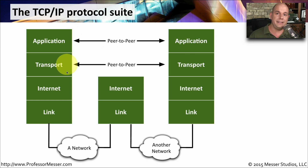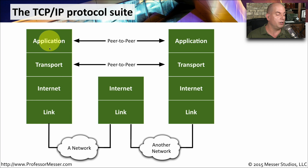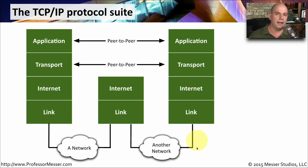The transport layer — the UDP and TCP port numbers — talk to each other directly, but neither of them know anything about what's happening down at the network level. Down at the internet and link level is where the communication is really occurring: the internet level being with our IP addresses, and the link level being the network communication itself. So we have this protocol suite that starts at the application and goes down to the network. As it's traversing the network, the other devices only have to go up as high as the internet layer to see what the IP addresses might be, and then they send it on to its next stop. Finally, at the end, we are able to put all of that data back together, and the applications are able to communicate with each other.